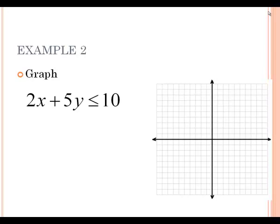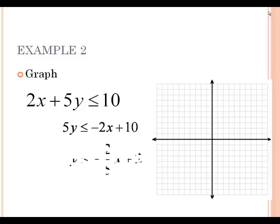On example 2, we first have to solve for y before we can graph. To solve for y, subtract 2x to the right, so we get 5y is less than or equal to negative 2x plus 10. Now divide everything by 5, giving us y is less than or equal to negative 2 fifths x plus 2. Start at the y-intercept, which is positive 2. Our slope is negative 2 fifths, so go down 2 and right 5 for the next dot.